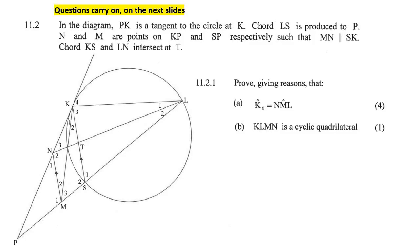The first question says — let's first see what they say. In the diagram, PK is a tangent, chord LS, and they've shown us that these lines are parallel. And then the chords intersect at T.